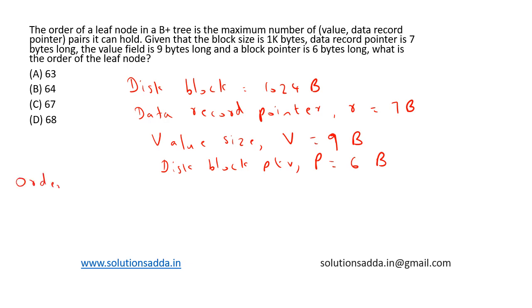Let's order of leaf be m. A leaf node in a B plus tree contains at most m record pointers, at most m values, and one disk block pointer.